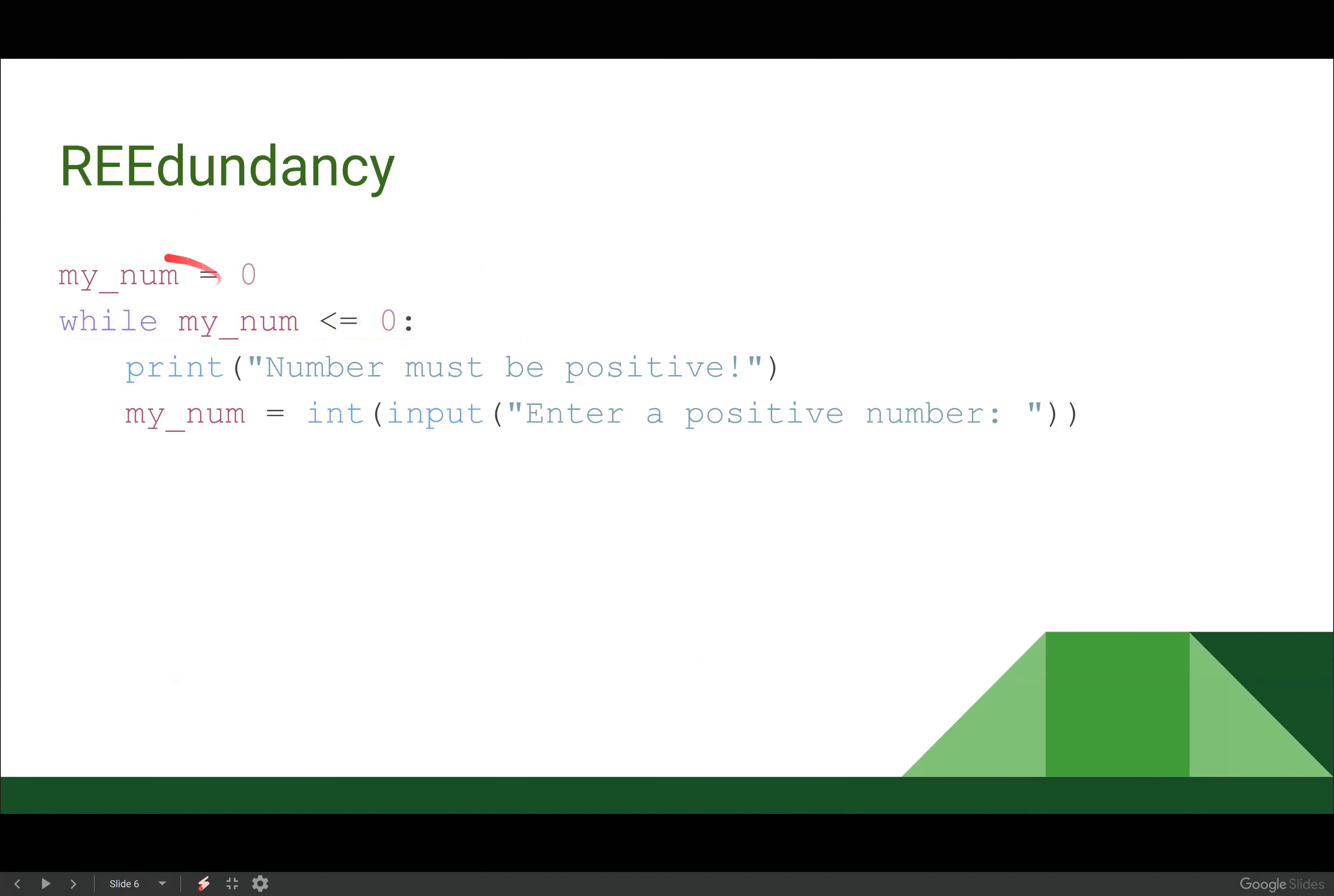Okay. So let's give my_num a value. So my_num equals zero. So my_num less than or equal to zero. That's going to be true. We're going to enter our loop now. But now if we look through our, we run through, we see that number must be positive error message before the user even has a chance to enter anything, right?